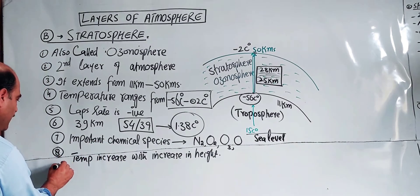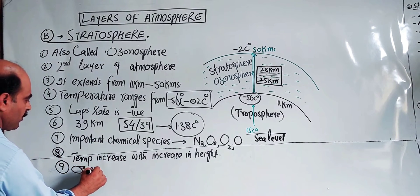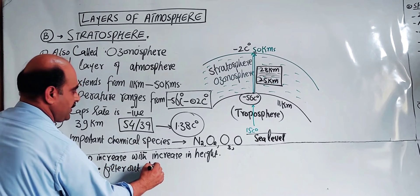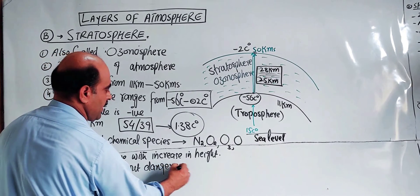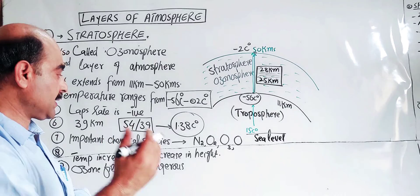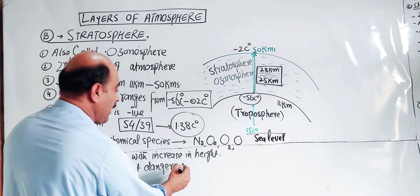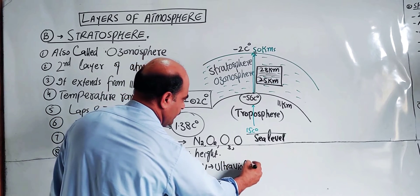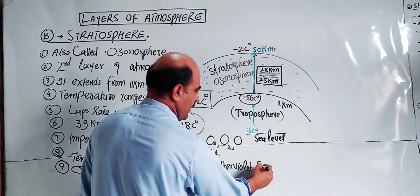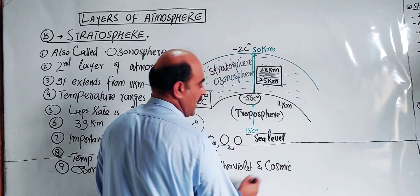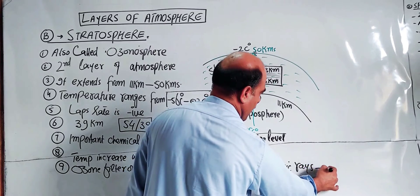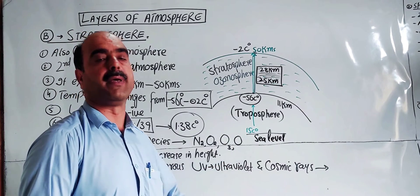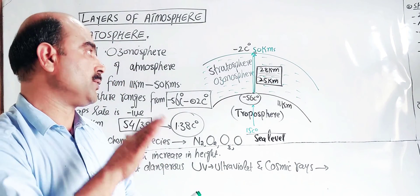The important function of ozone, O3, is to filter out dangerous, carcinogenic ultraviolet UV radiation and cosmic rays coming from outer space. These ultraviolet radiations and cosmic rays are absorbed by ozone in this layer.